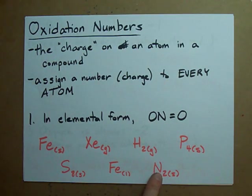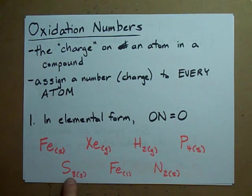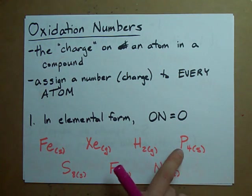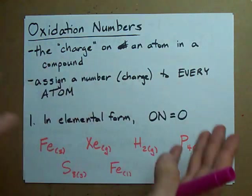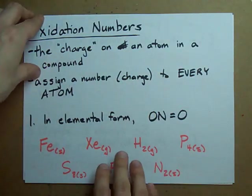Sulfur, that's S8 in case you didn't know, that's just an element. That has an oxidation number of zero. Phosphorus, P4, oxidation number of zero. It's an element. Piece of cake.